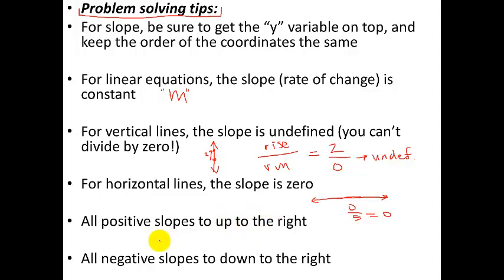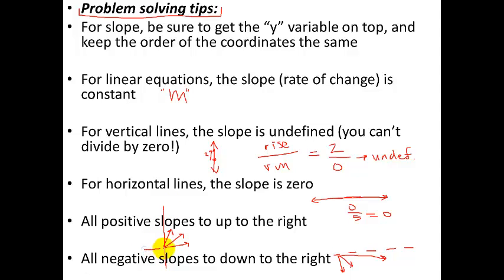All positive slopes go up and to the right — they could be steep, medium, or shallow, but they all go up and to the right. Negative slopes go down, and they could also be steep, medium, or shallow, as long as they're below the flat horizontal line. Remember, in your coordinate system, the x-axis goes horizontal and the y-axis goes vertical. Anything above the x-axis going right is positive slope; anything going downward is negative slope.